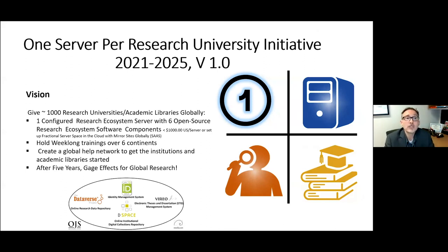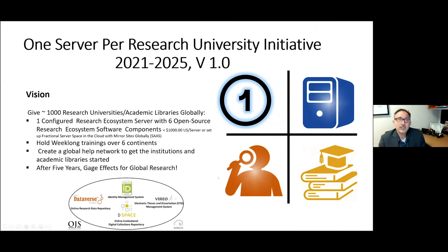In terms of our future vision, the initiative we're interested in forwarding is called One Server — one server per unit research university initiative. The vision is to give 1,000 research universities, with academic libraries as their central infrastructure globally, one configured research ecosystem server with the six open source research ecosystem software components discussed. Hold week-long trainings over six continents, and then create a global help network to get the institutions and academic libraries started.